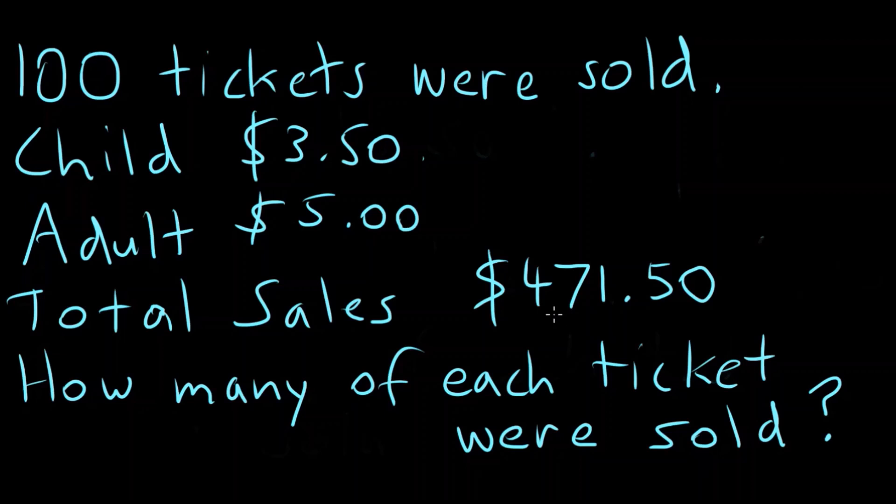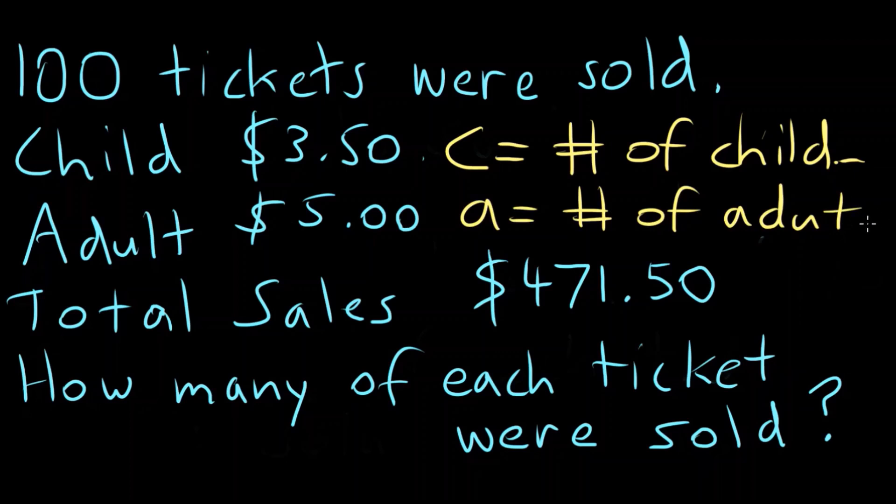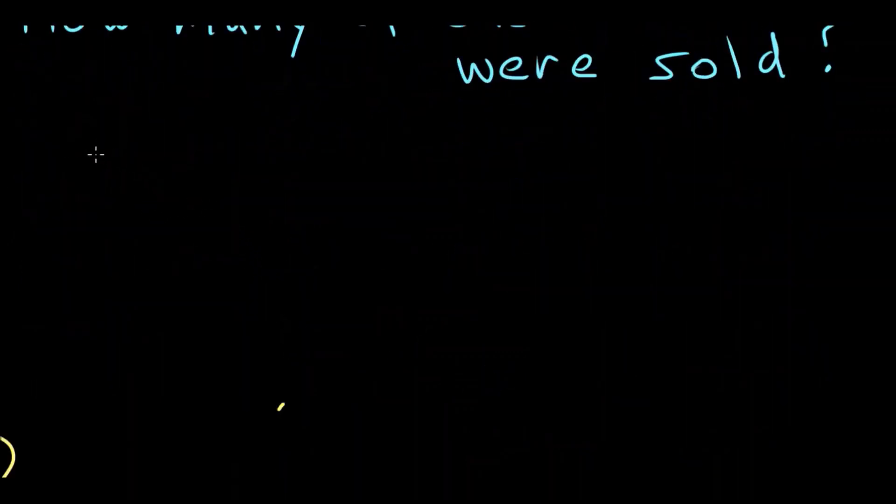Okay, so we know that 100 tickets were sold. How about we assign variables first? So C equals the number of children's tickets, A equals the number of adult tickets sold. So if we know that, wouldn't it follow that A plus C equals 100? So let's go down and write that. Our equation one is A plus C equals 100.